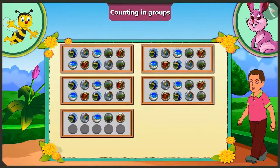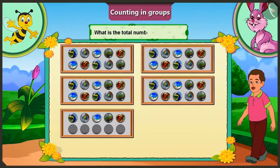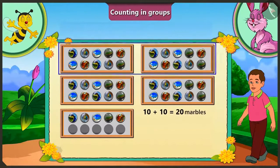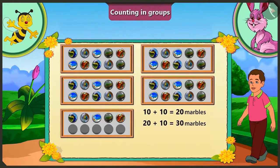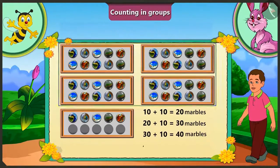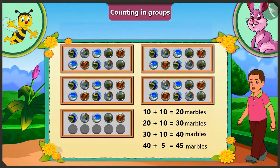Well done. Now tell me, what is the total number of marbles here? Here we have ten and ten, twenty, twenty and ten thirty, thirty and ten forty, forty and five forty-five marbles in total.